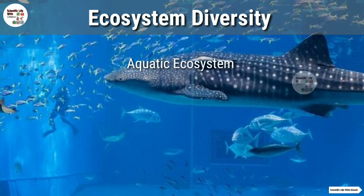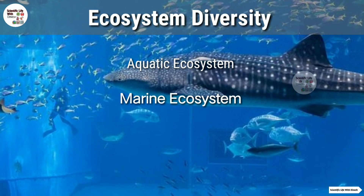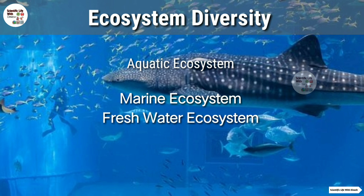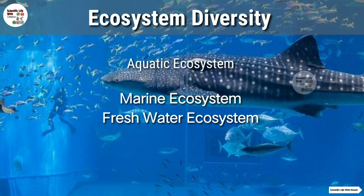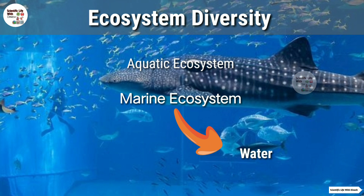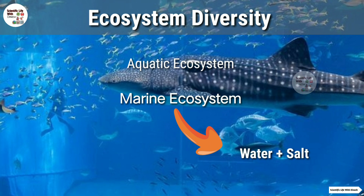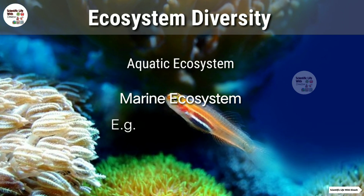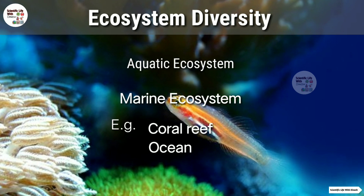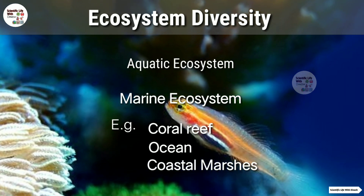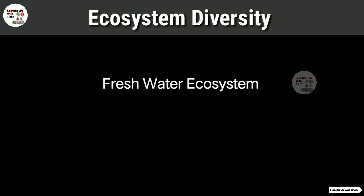Aquatic ecosystem mainly do types ka hota hai — marine ecosystem aur freshwater ecosystem. Jo marine hai uska meaning hai jis water mein salt hota hai. Iske examples aate hain: coral reef, ocean, aur coastal marshes.